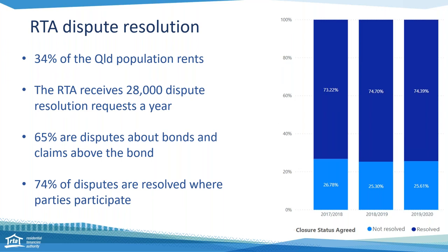The biggest driver of dispute resolution requests over the past three years has been bond disputes and claims above the bond — that's around 65% of dispute cases received at the RTA. At the RTA we always encourage self-resolution as the first option, but we appreciate it's not always possible. That's why the RTA's free and impartial dispute resolution service exists. Our conciliators do not determine who's right or wrong and cannot make decisions about disputes or enforce rules or regulations. The process is voluntary, but the good news is RTA conciliators resolve 70% of dispute cases where parties participate.